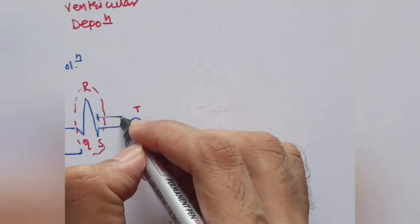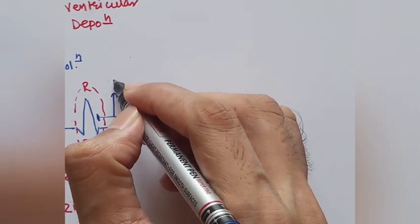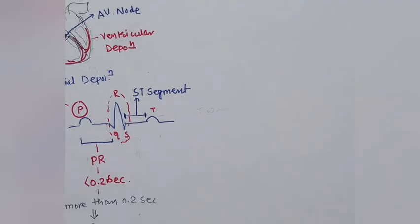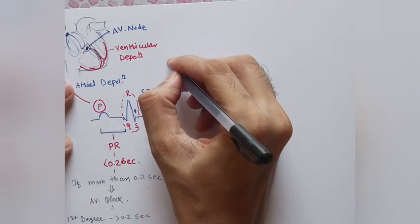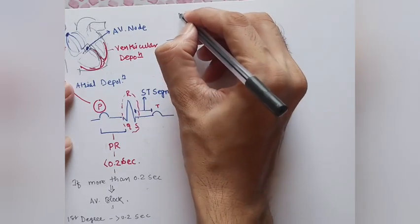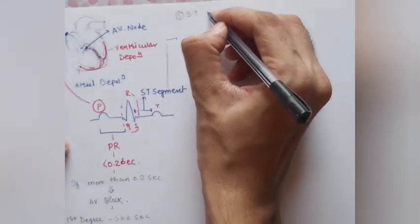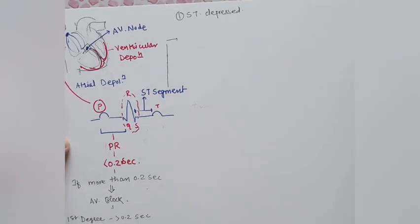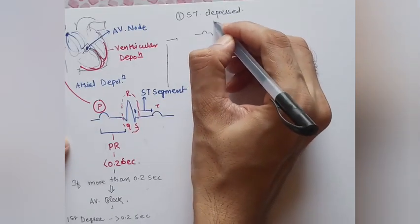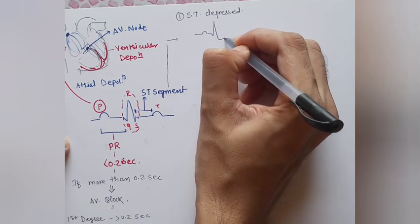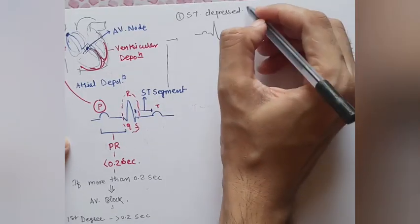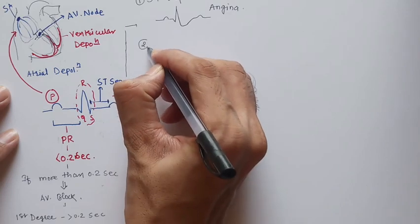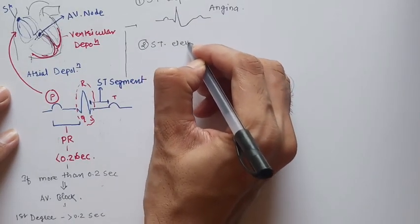After the QRS complex, we have the ST segment, which starts from the end of S and the beginning of T. This segment is important in diagnosing different cardiac conditions. A normal ECG has an isoelectric ST segment. If we have ST depression — the ST segment is lower than it should be — then we have angina.